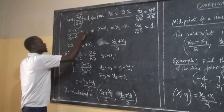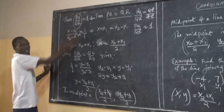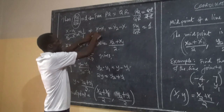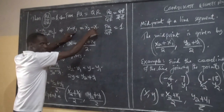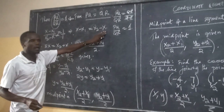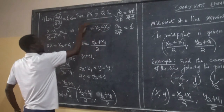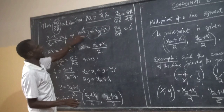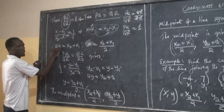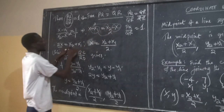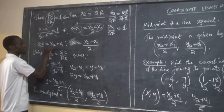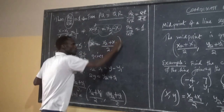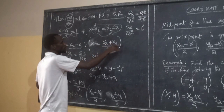Collecting like terms: X and X become 2X on one side, and X2 plus X1 on the other. So 2X equals X2 plus X1. Dividing both sides by 2 gives X equals X2 plus X1 over 2. This is our derived formula for the X-coordinate of the midpoint.